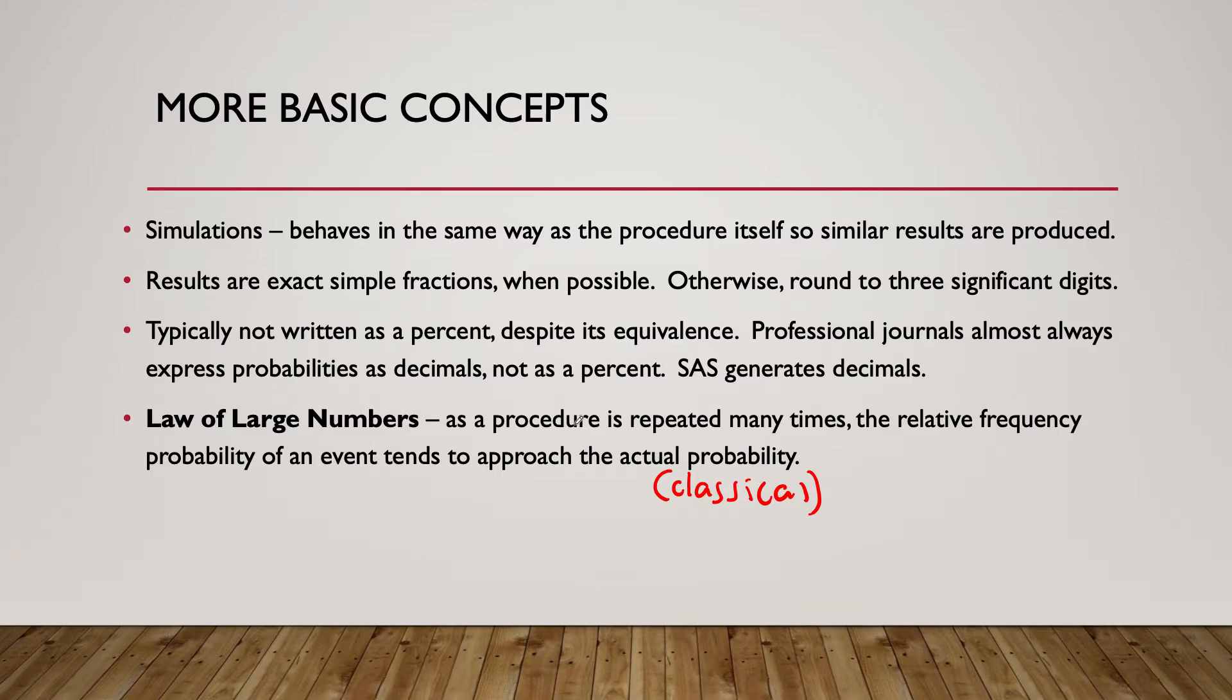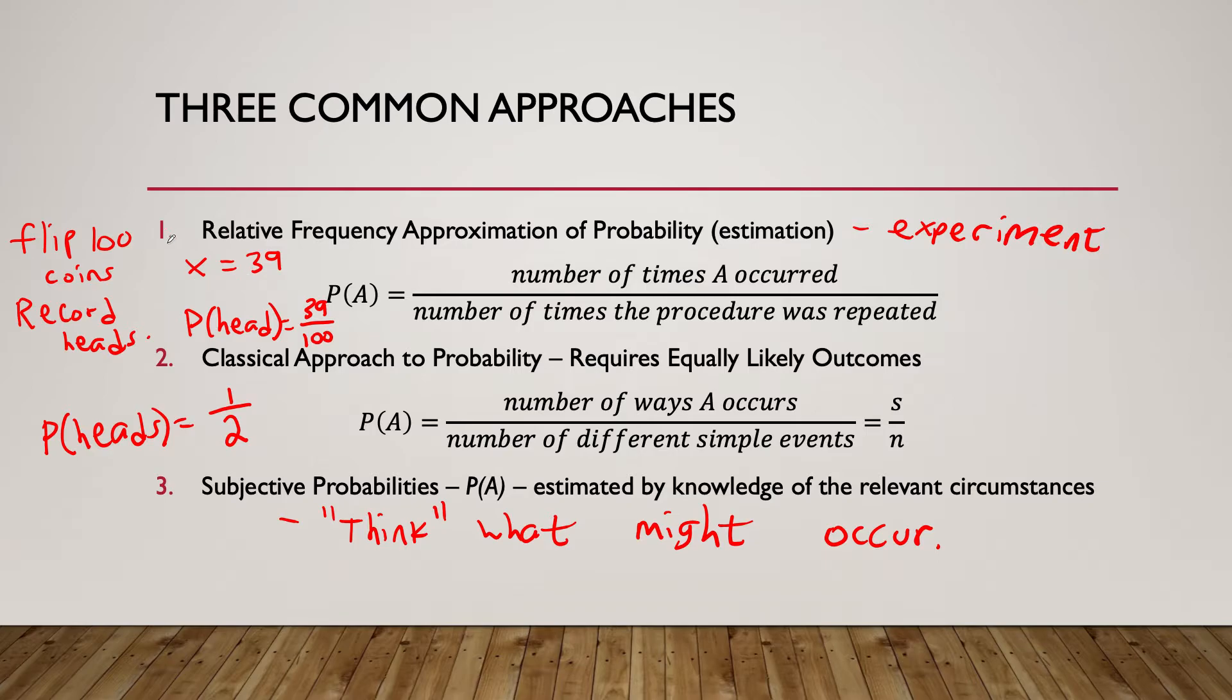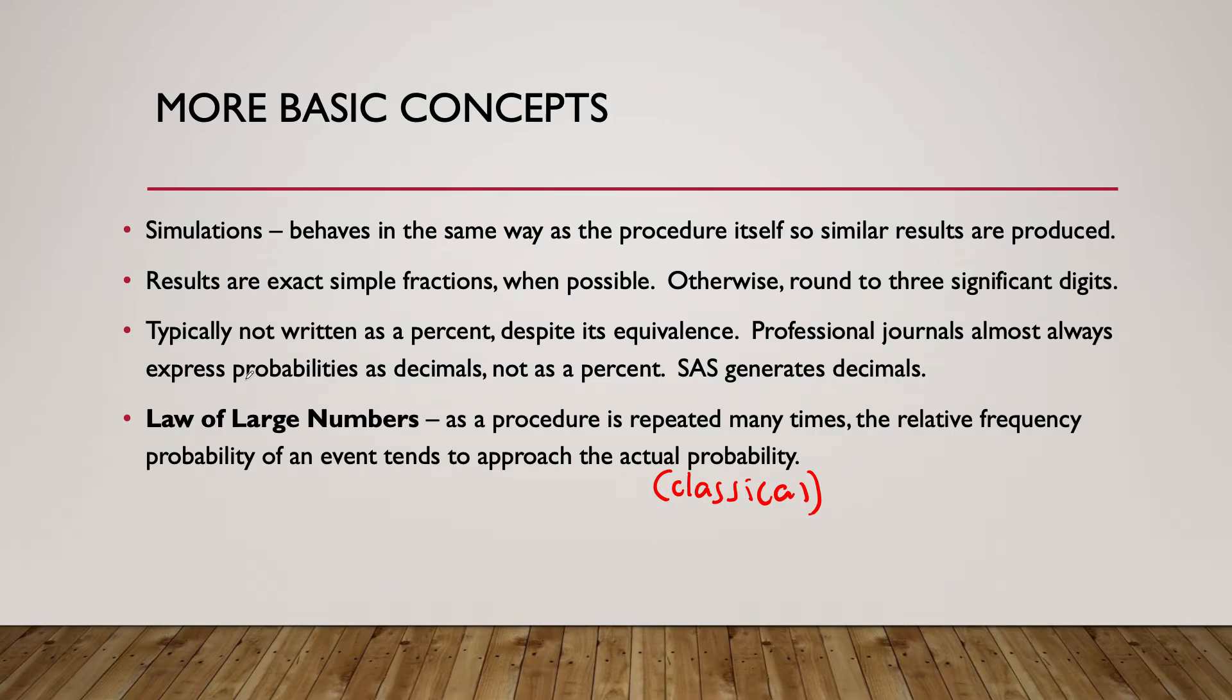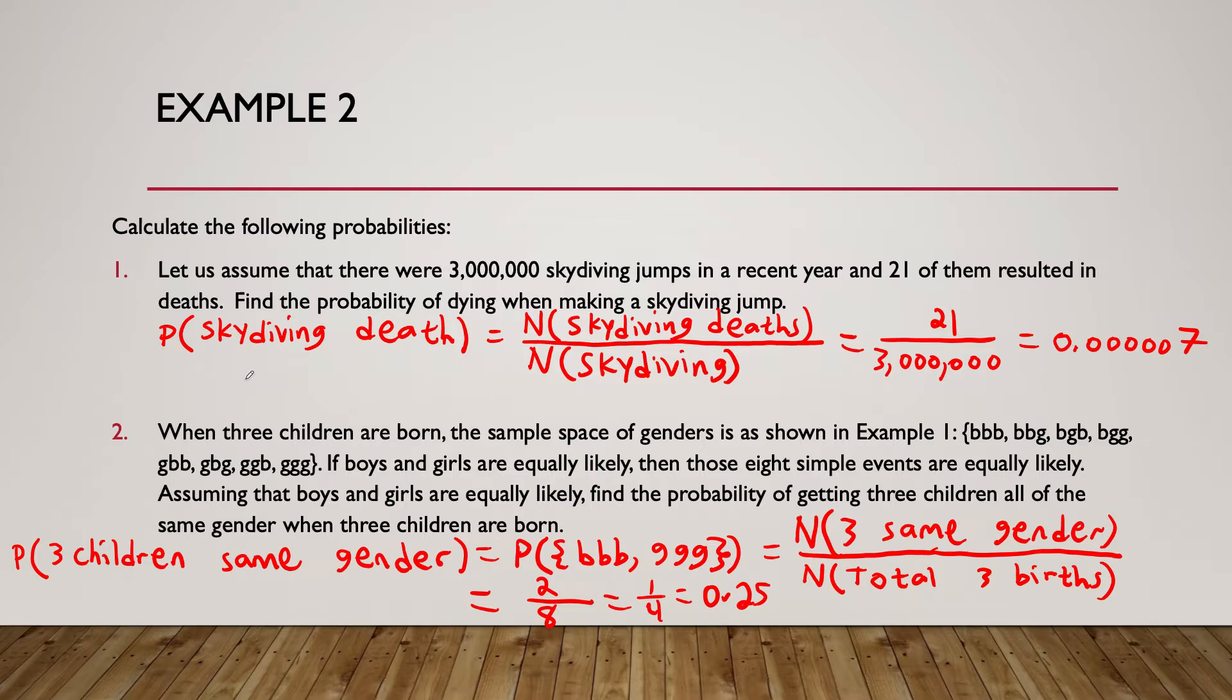The law of large numbers states that as a procedure is repeated many times, the relative frequency probability of an event tends to approach the actual probability. Meaning the relative frequency calculation would equal or at least approach the classical probability. If we did it a thousand times, the probability of obtaining heads will definitely be pretty close to one-half. As we do it many, many times, it would get closer to one-half.